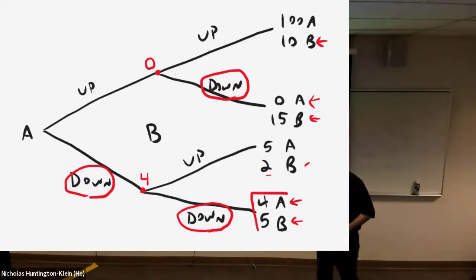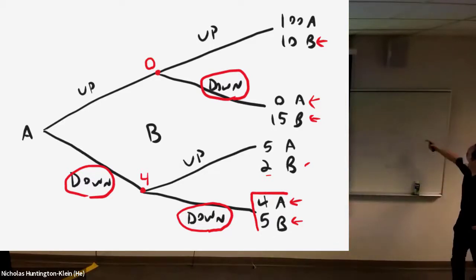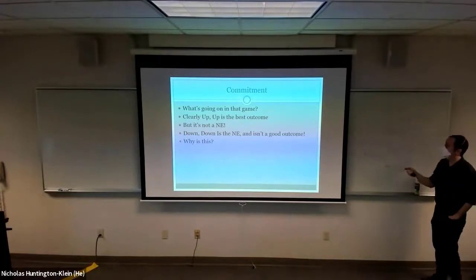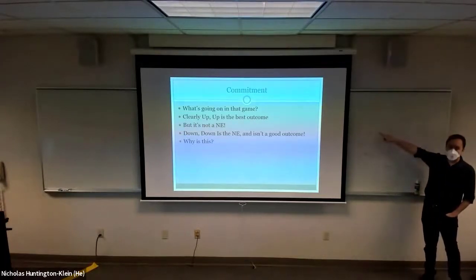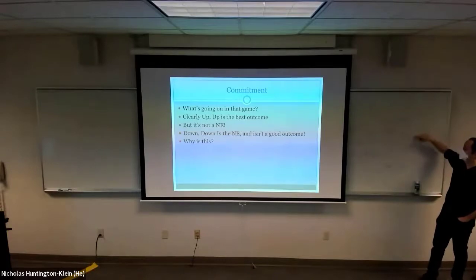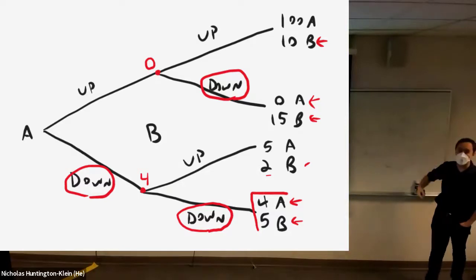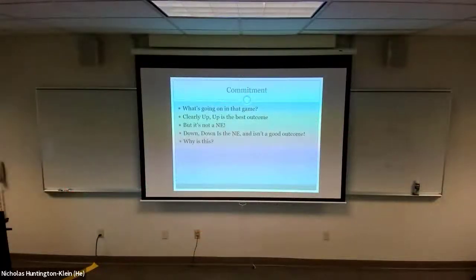So clearly up-up is the best outcome. This is definitely where they'd rather be. They'd rather certainly be here than here, but it's not the Nash equilibrium. Why is it not the Nash equilibrium? Well, because we know that if we get to this point right here, if A goes up, it's in B's interest to go down instead. So B can't really go up here. If B is going to choose not to go up here, which means that A can't really trust them to go up there. So they're not going to try.